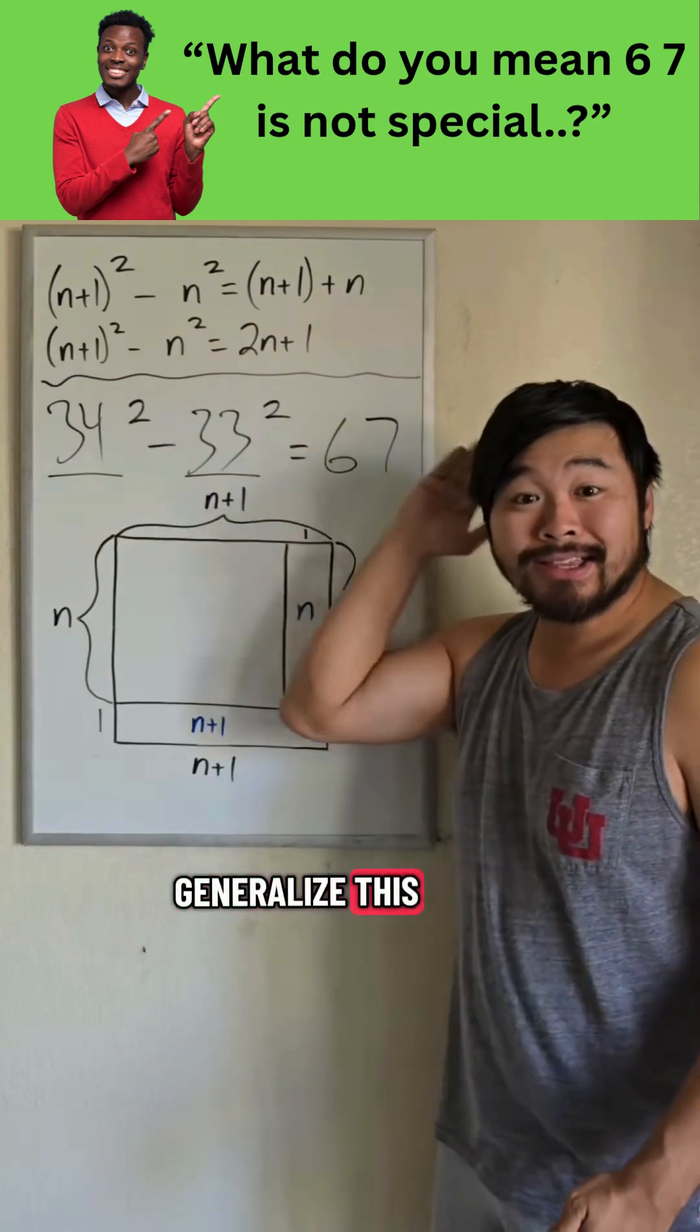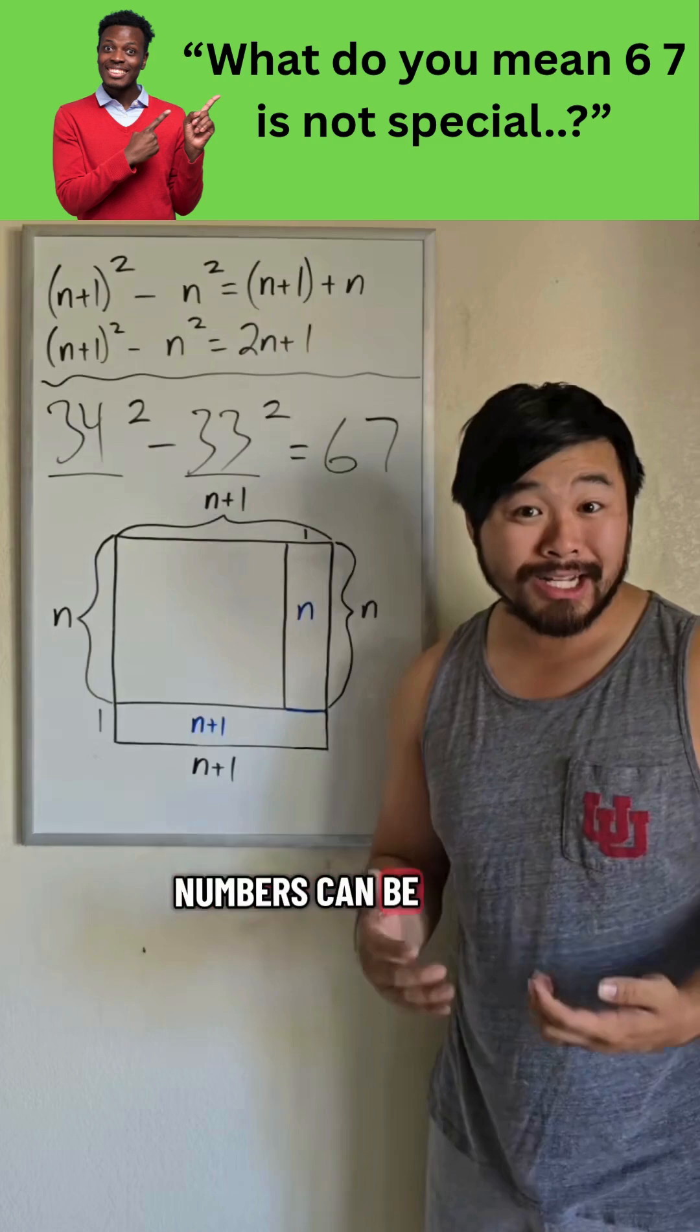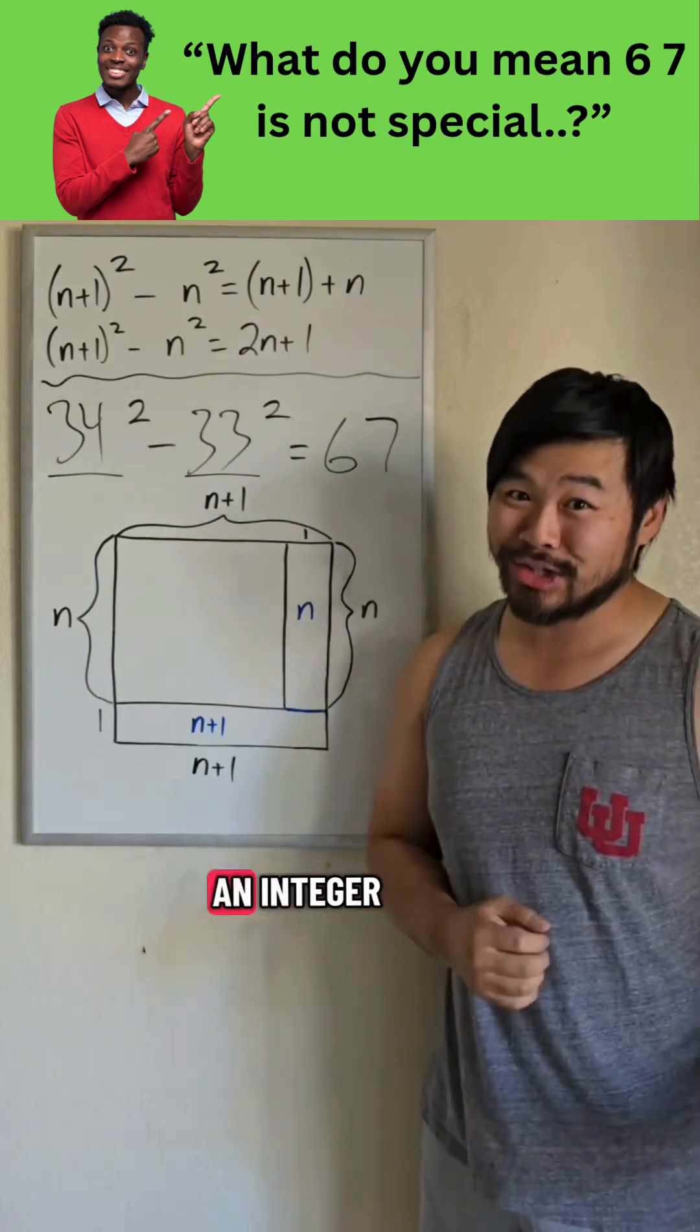Because when we generalize this, the difference is 2n plus 1. And all odd numbers can be written in this form, 2n plus 1, where n is an integer.